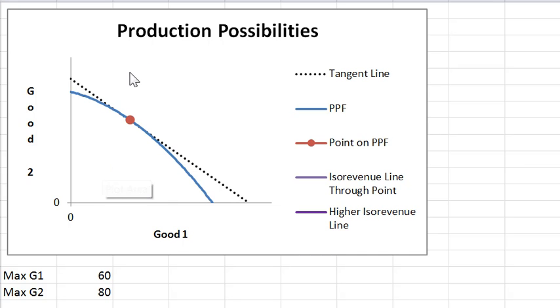This first graph is about production possibilities. The blue curve labeled PPF stands for production possibility frontier. The firm can produce two goods, good one and good two, and the frontier represents the efficient combinations. That's the most of good two you can get for a given amount of good one.